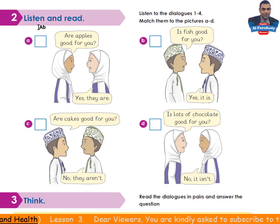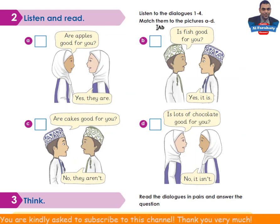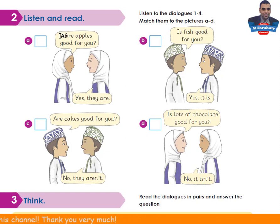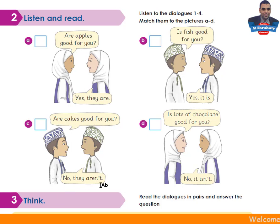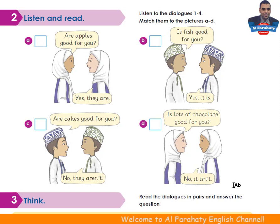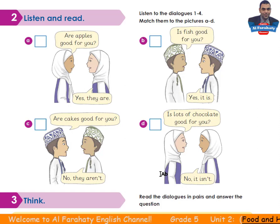Let's go to Activity 2 — Listen and read. Listen to the dialogues 1 to 4 and match them to the pictures A to D. Let's read the dialogues first. Are apples good for you? Yes, they are. Is fish good for you? Yes, it is. Are cakes good for you? No, they aren't. Is lots of chocolate good for you? No, it isn't. Now listen to the dialogues and match them to the pictures, then come back to check your answers.